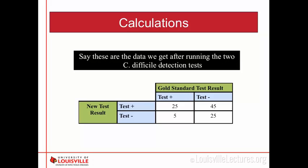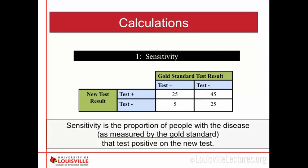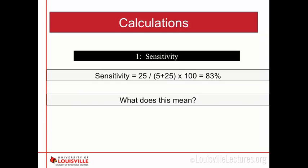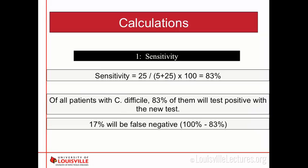With the data from running the dog's new test and one of our stool tests: sensitivity is the proportion of people who have the disease, as measured by the gold standard, that test positive on the new test. The formula is true positives divided by true positives plus false negatives, times 100. Plugging these numbers in, we get 83%. A sensitivity of 83% means that of all patients with C. diff, 83% will test positive with the new test, and 17% will be false negatives.